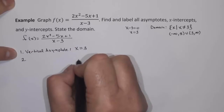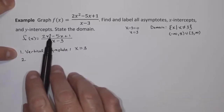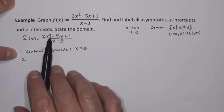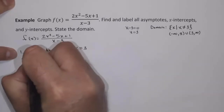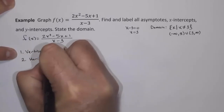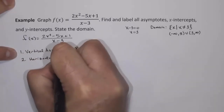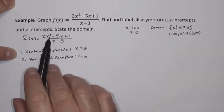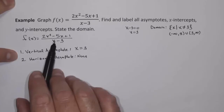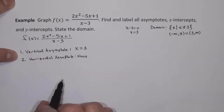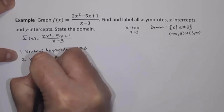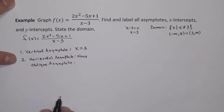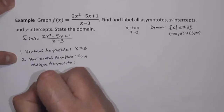Next we want to talk about horizontal asymptotes and oblique asymptotes. The degree of the numerator is 2 and the degree of the denominator is 1. Because the degree of the numerator is larger than the degree of the denominator, we do not have any horizontal asymptotes — there are none. The degree of the numerator is 1 bigger than the degree of the denominator, so we are going to have an oblique asymptote, and we need to figure out what that oblique asymptote is by dividing.